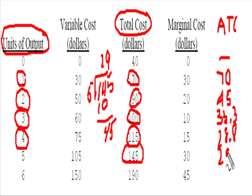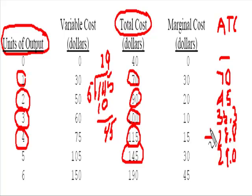What we notice is already happening: the average total cost is already beginning to rise. So that means average total cost already hit a minimum right there at 28.8. So we determine that the level of output where ATC is at its minimum is at 4 units of production.